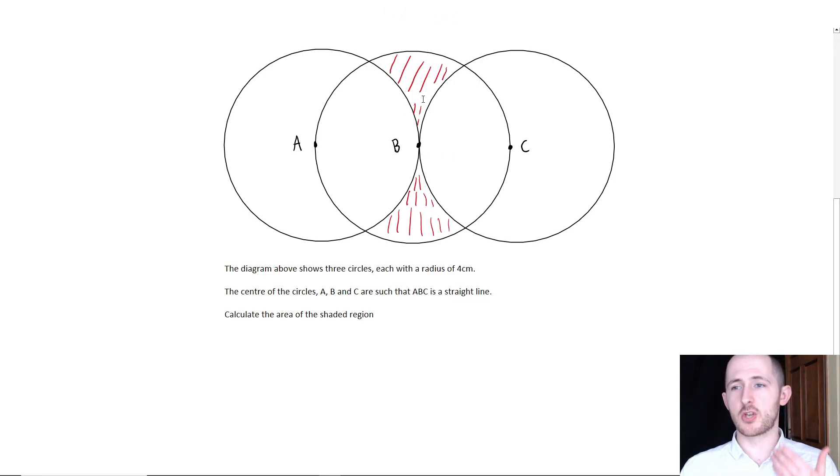First things first, can you see that this top red area is the exact same as this bottom red area? This means we can actually half our problem and just work on the top area and then double it at the end. So we just have to work out the top area and then double, which makes our lives ever so slightly easier.